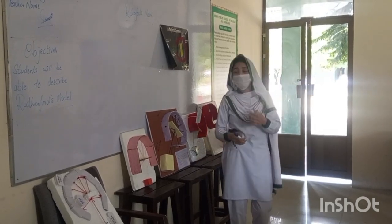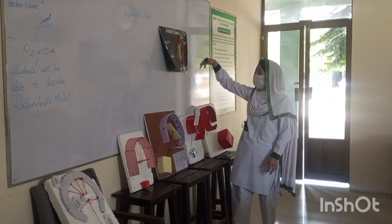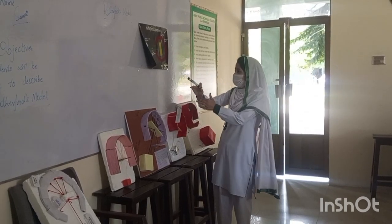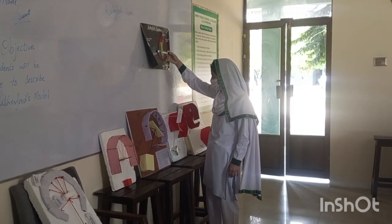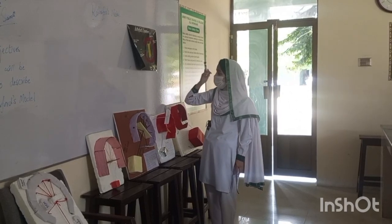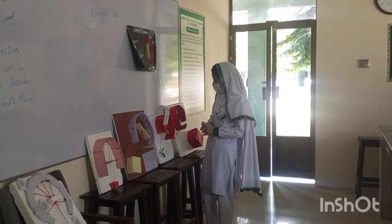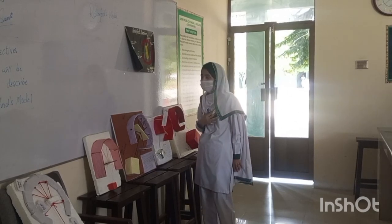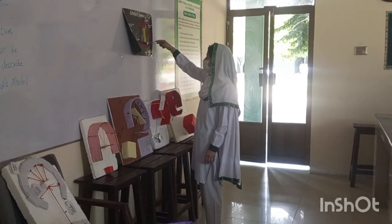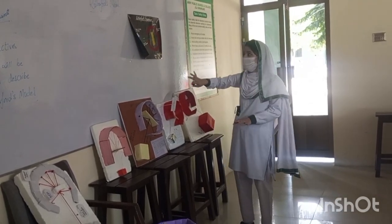Rutherford performed a series of experiments and obtained similar results. The conclusions were that most of the space in the atom was empty, and the particles deflected at greater than 90 degrees were due to electrostatic repulsion. Massive particles are not deflected by electrons.